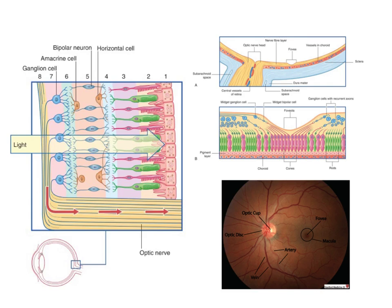The other thing to note is that here's the optic nerve, and the optic nerve does not have any photoreceptors. So where the optic nerve leaves the eyeball, there are no photoreceptors, and this is your blind spot.